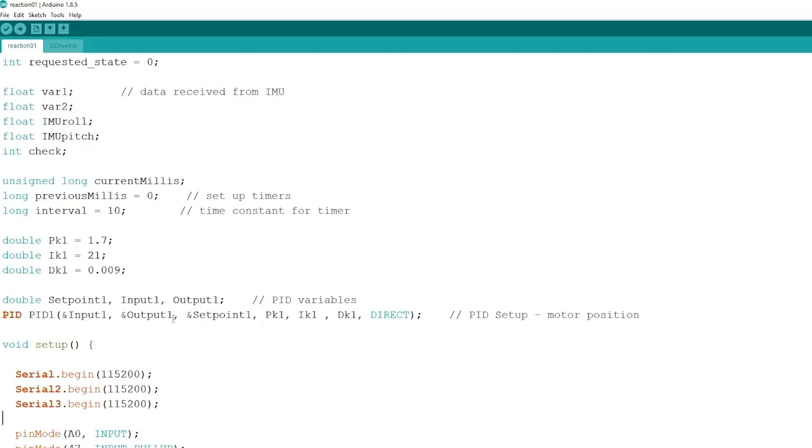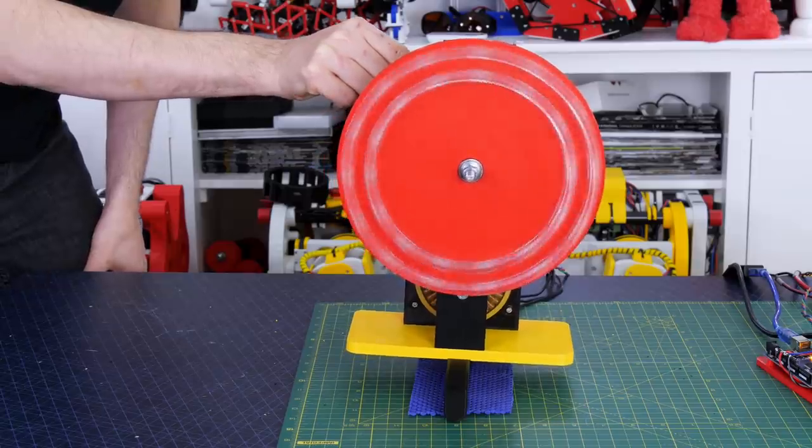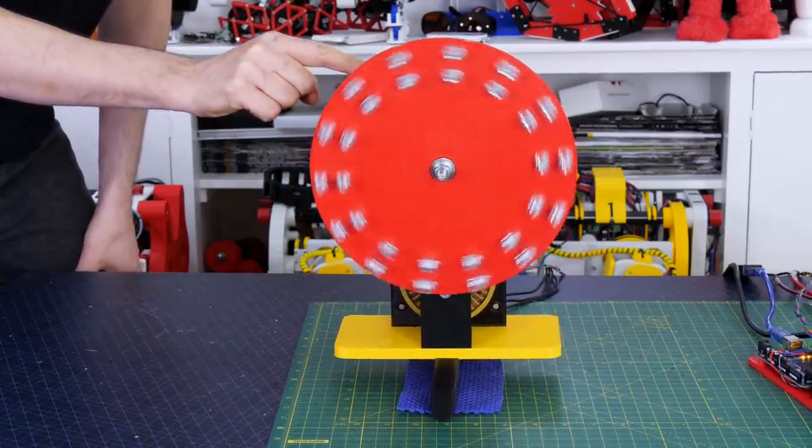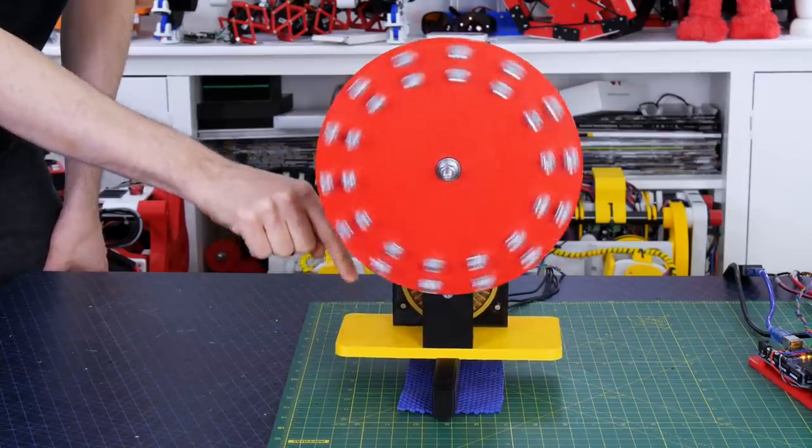So typical PID values for a balancing robot look like a much higher integral term and a much smaller derivative term with the proportional value somewhere in the middle. I tune these values by trial and error and it's a bit like focusing a camera with three lenses to get them all balanced depending on the physical characteristics of the device.